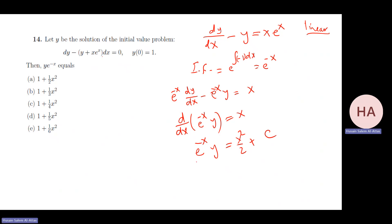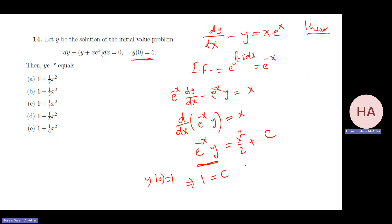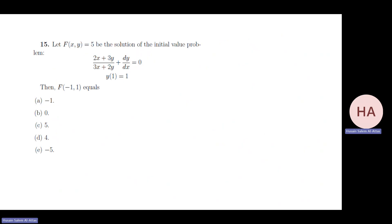This is the form he wants, so leave it as is and find C using the initial condition y(0)=1. At x=0: e⁰·1 = 1 = 0 + C, so C=1. Therefore y·e^(-x) = x²/2 + 1, giving y = e^x(1 + x²/2), which is the solution.